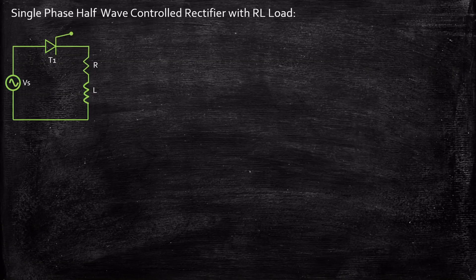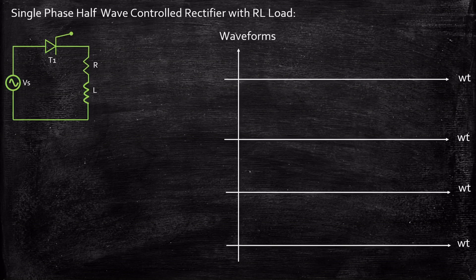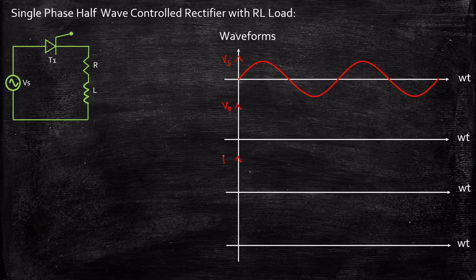Now we need to understand the operation of how this circuit behaves. Let us consider the waveforms and understand the operation with respect to waveforms in parallel, so that you will have a clear understanding of the circuit operation. We are considering a sinusoidal voltage source represented as Vs, and we will be looking at output voltage Vout, output current Iout, and also the voltage across the thyristor.